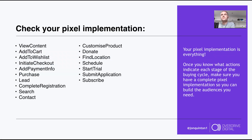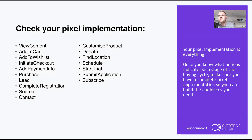Pixel implementation is absolutely key. If you don't have the Facebook pixel implemented correctly, you have no way of targeting the right audiences. The standard events include view content (product page views) and purchases. If you don't have them in, you don't know when actions have happened, and you can't measure what's happening after purchase — like how many purchasers came back and viewed another product or signed up for a newsletter.